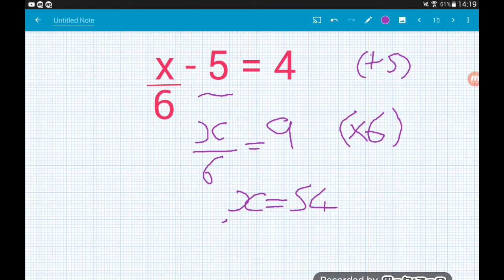Let's try it. If we substitute in x equals 54, we're going to get 54 divided by 6, which is 9 minus 5 is indeed 4. Happy days.